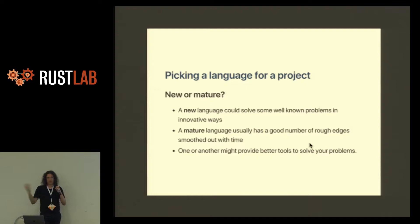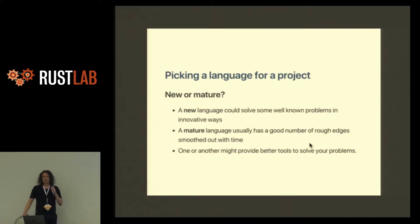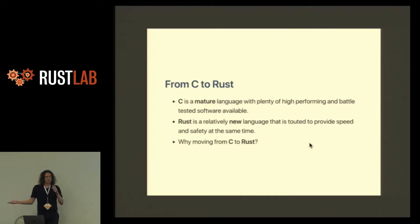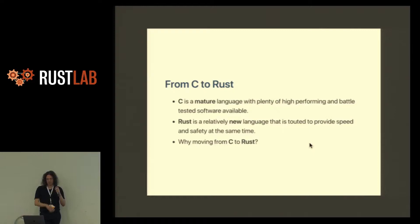Usually you have two choices. You can jump on a new language — some problems could have a better solution. Or you can stay on your well-known mature language, that usually has its pros and cons but is fairly known, at least to you. We have C, which is quite a mature language with lots of different code available. We have Rust — sort of new — where lots of annoying problems got solved the right way from the beginning. Let's give it a try to Rust.